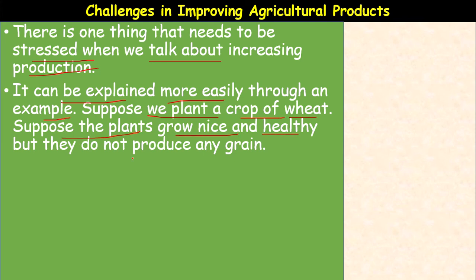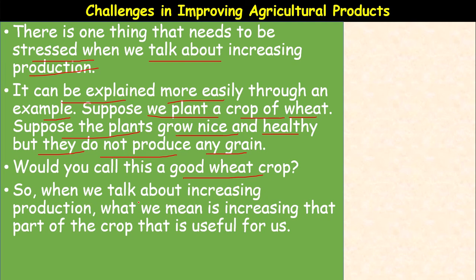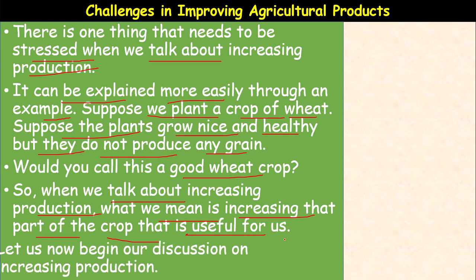Suppose the plants grow nice and healthy, but they do not produce any grain — that is one situation. Would you call this a good wheat crop? No. The plant may grow very nicely without any disease, healthy with many branches, but if it did not produce any seeds or grain, we would not call this a good wheat crop.